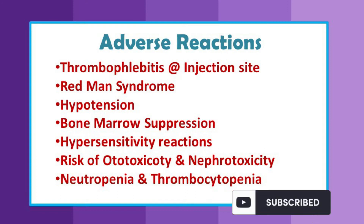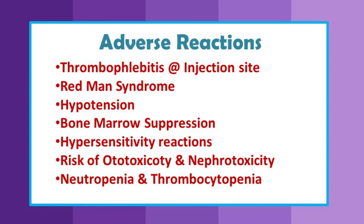Adverse drug reactions: when given as IV infusions, glycopeptides can cause thrombophlebitis at the injection site. Vancomycin in particular can cause red man syndrome, hypertension, bone marrow suppression, and hypersensitivity reactions. There is a risk of ototoxicity, which is reversible, and also a risk of nephrotoxicity — though this is rare. The proximal convoluted tubule is particularly affected, and it can also cause acute interstitial nephritis. This is usually seen with high-dose IV infusions, and the risk increases when these drugs are given alongside gentamicin, furosemide, or cyclosporine. Bone marrow suppression can result in neutropenia and thrombocytopenia.